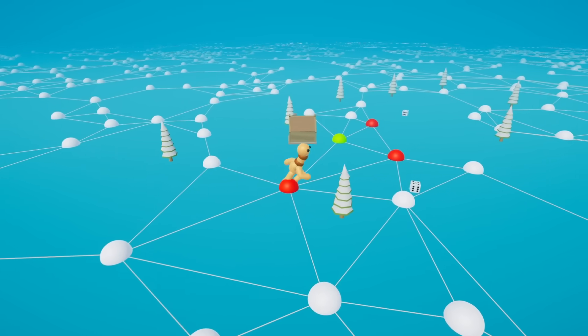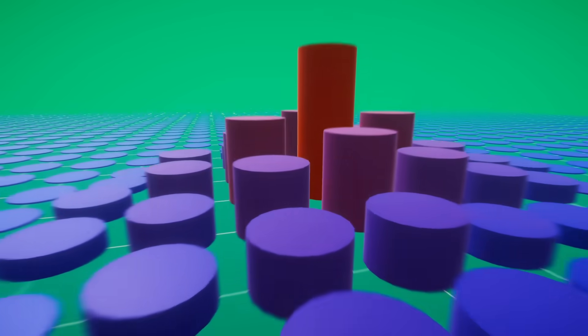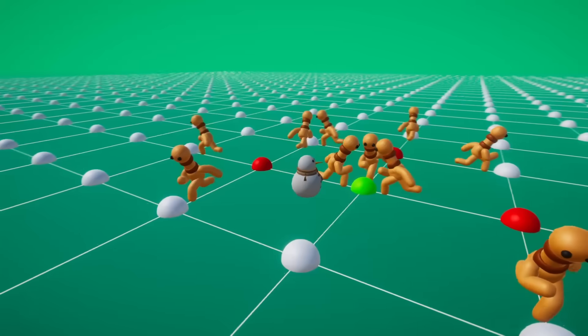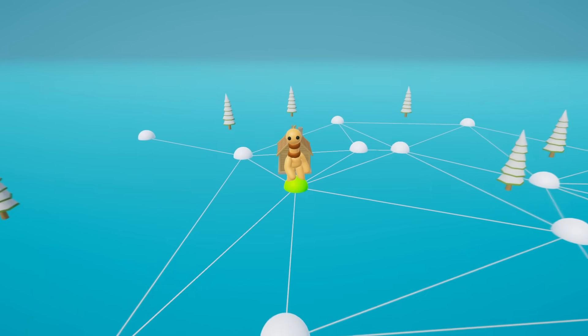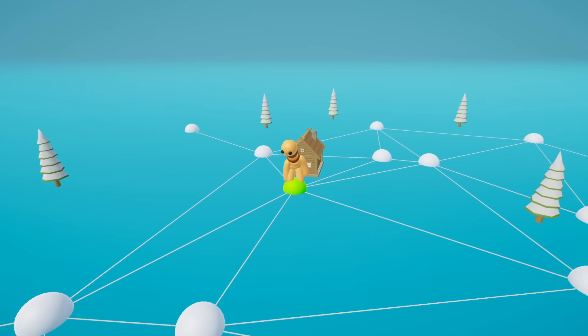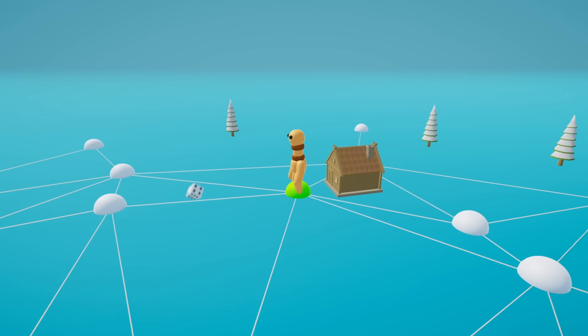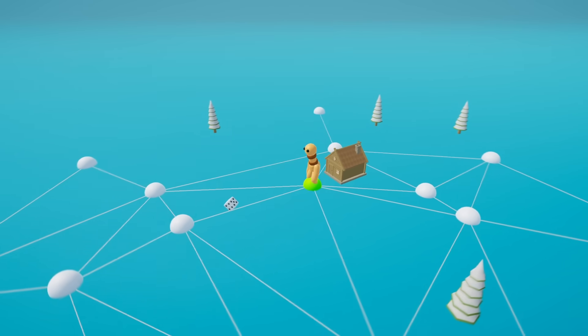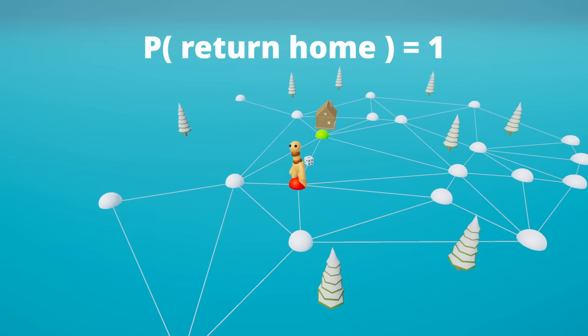In this video we will explore how our pawn behaves in different dimensions. First, let's make our pawn wander a small finite town where there's just a dozen nodes. As our intuition tells us, he is guaranteed to return — mathematically we say probability 1.